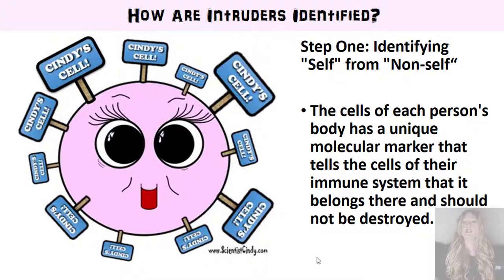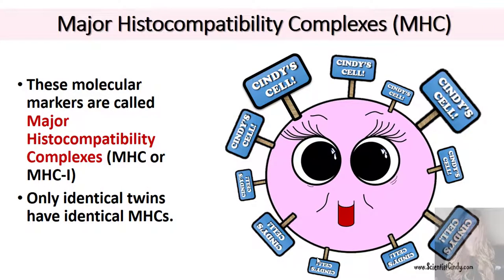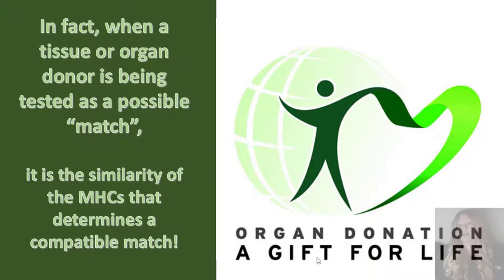So how are these intruders identified? Step one is to identify self from non-self. The cells of each person's body have a unique molecular marker that tells the cells of the immune system that it belongs there and should not be destroyed. These molecular markers are called major histocompatibility complexes, or MHC, sometimes MHC1. Only identical twins have identical MHCs. When an organ or tissue donor is being tested for a possible match, it is the similarity of the MHCs that helps determine compatibility.